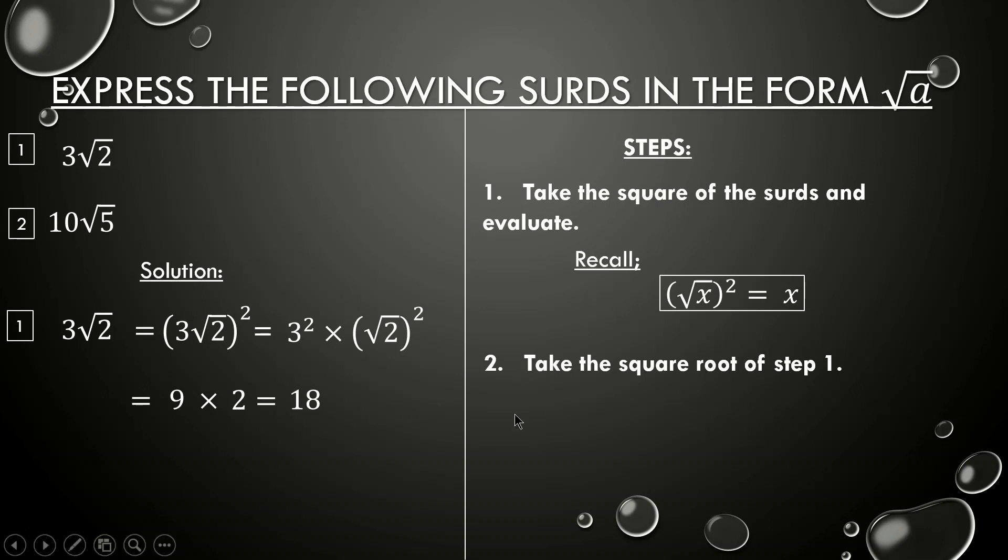All right, now the second step is to take the square root of this. Therefore my final answer is √18. So this is our final answer. So as you can see I have changed these surds into a single surd in the form of √a.